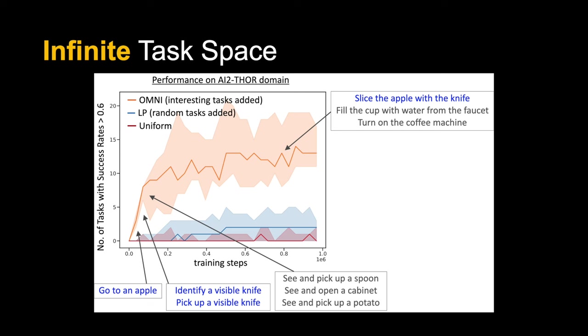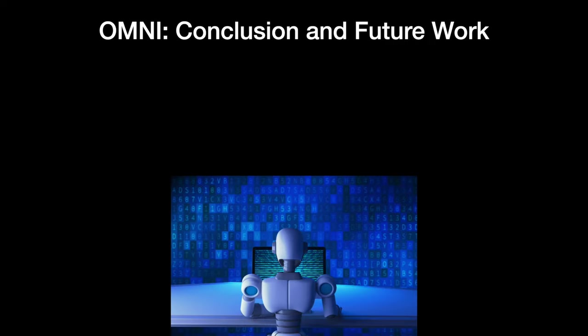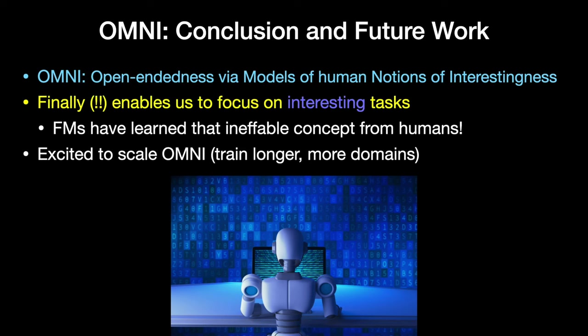A cool progression of tasks appears across time: first focusing on simple things like getting an apple and picking up a knife, then learning a whole bunch of other skills and combining them — like slicing the apple with the knife. To conclude this work, OMNI finally allows us to focus on interesting tasks in open-endedness research because foundation models have learned that ineffable concept from humans. We're excited to scale OMNI with longer training runs and across more domains.